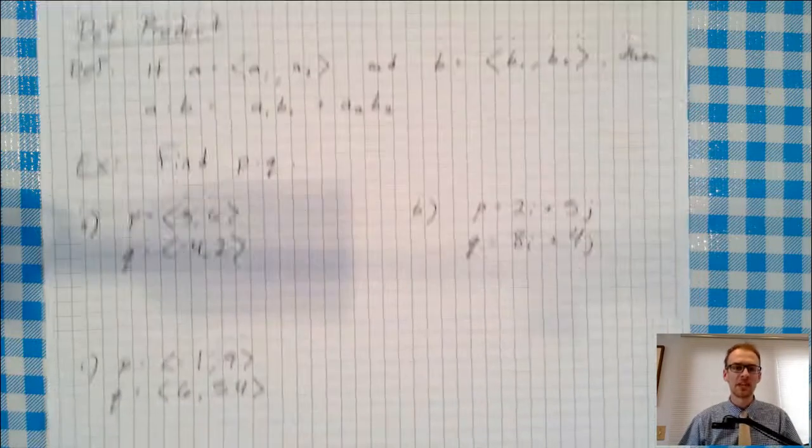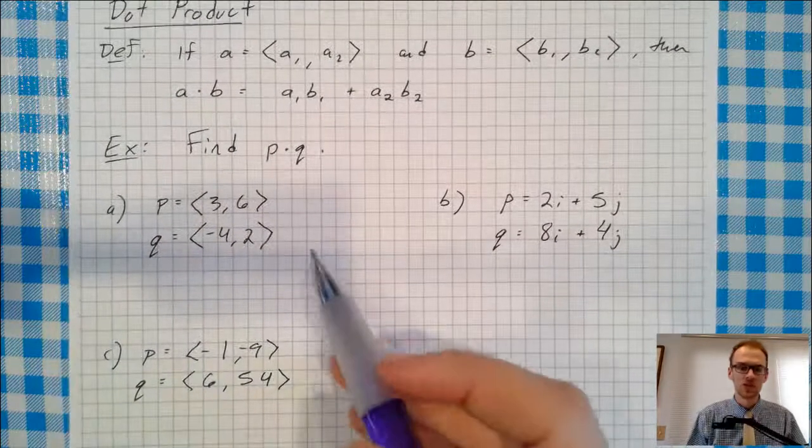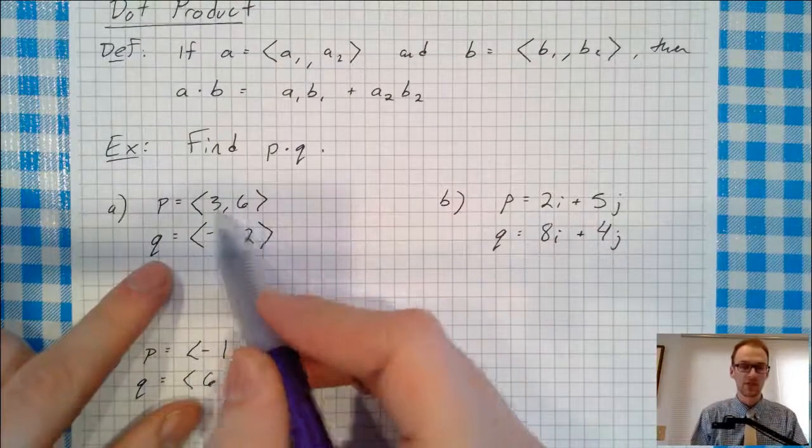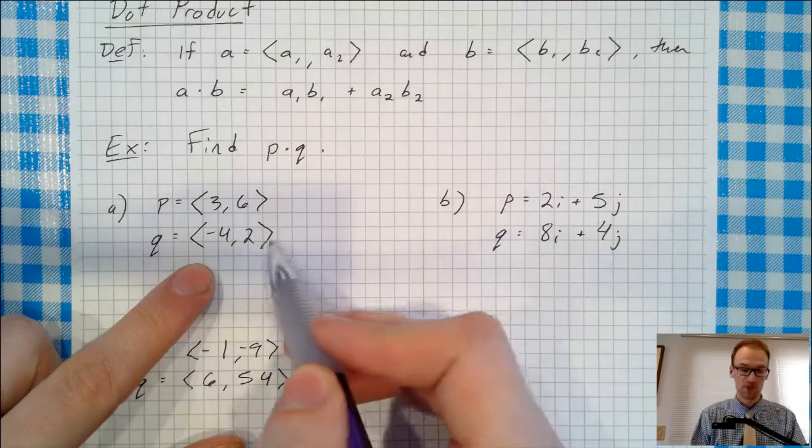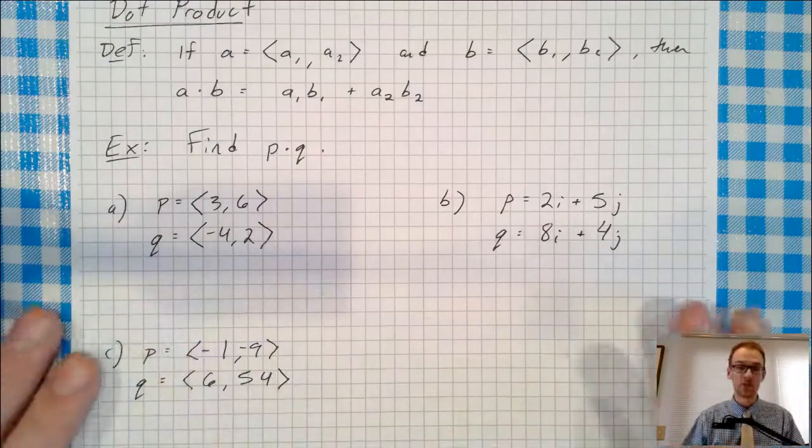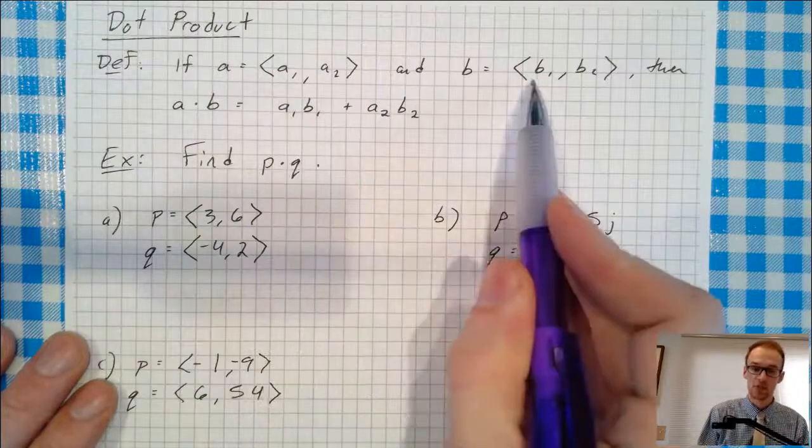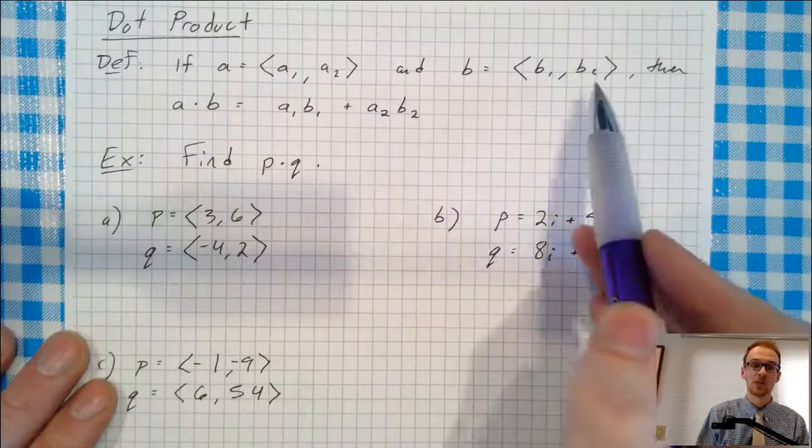Find P dot Q. Okay, well here's P. Let's do this three different times. P is the vector 3, 6. Q is the vector negative 4, 2. You could graph those. There's no need because finding the dot product is just a matter of multiplying the x components, A1 and B1, multiplying the y components, A2 and B2.